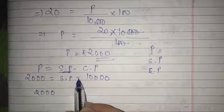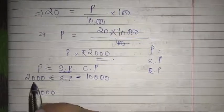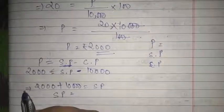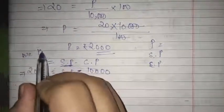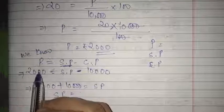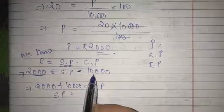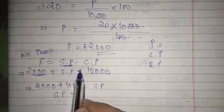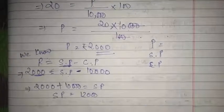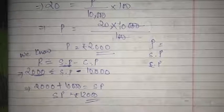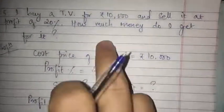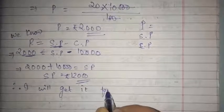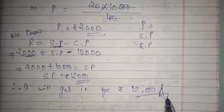Using P = SP − CP: 2,000 = SP − 10,000. Bringing 10,000 to the other side, it becomes positive: SP = 2,000 + 10,000 = 12,000. So SP is rupees 12,000. The answer to the question 'how much do I get for it' is: I will get it for rupees 12,000.